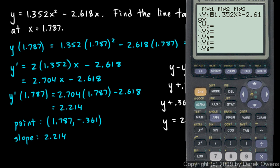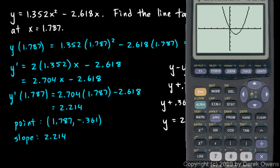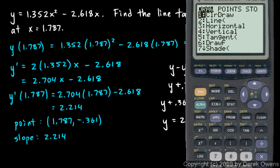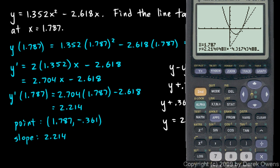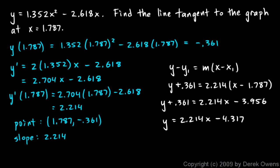Let's check that on the calculator. Here's the function: y equals 1.352x squared minus 2.618x. We graph it, then hit Second Draw and draw a tangent line at x equals 1.787. The calculator gives y equals 2.214x plus negative 4.317, so we're good. That's a basic introduction to tangent lines. After we do some more techniques of differentiation, we'll come back and do more work with tangent lines of different types of functions.